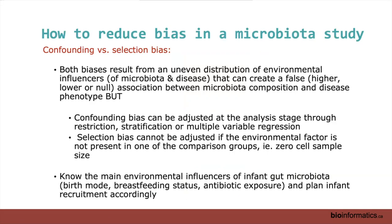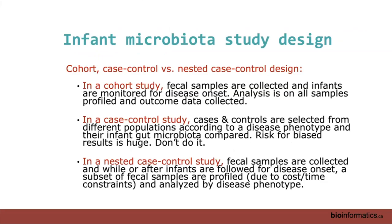The bottom line: know what the main influencers are. For infant gut microbiota, we know it's birth mode, breastfeeding status, and antibiotic exposure. Plan your recruitment accordingly to make sure you have even representation based on these confounding factors. Now let's talk about three main types of study design using the example of an infant microbiota study: the cohort, the case-control, and the nested case-control design.